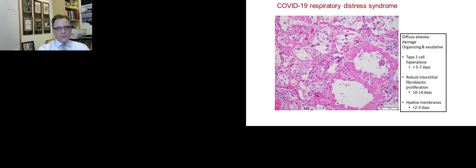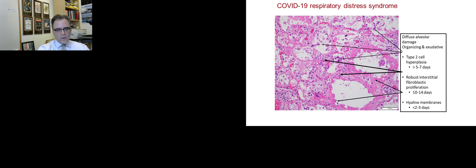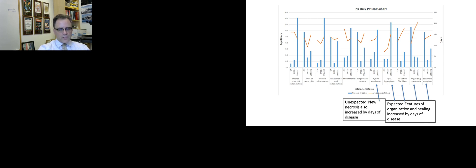A typical COVID-19 respiratory distress syndrome case showed all these features of diffuse alveolar damage. What's interesting is that in addition to the type 2 cell hyperplasia of regeneration seen at around 5 to 7 days after injury, and simultaneously a robust interstitial fibroblastic proliferation at 10 to 14 days, we simultaneously saw new injuries in the form of hyaline membranes and necrosis, which we would have expected at two to three days. These were side by side. In a large cohort of 68 patients from Weill Cornell, Mount Sinai, and Italy, we found that necrosis also increased by days of disease.